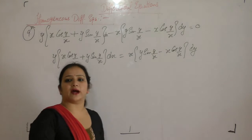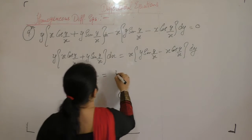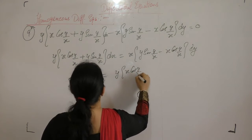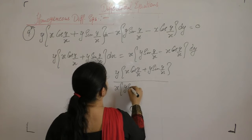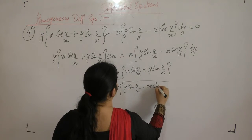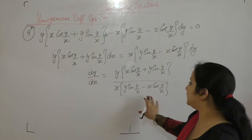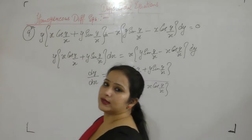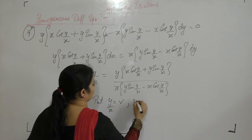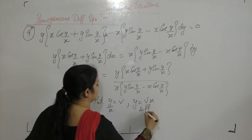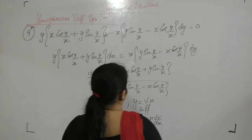We find dy upon dx equals y times x cos(y/x) plus y sin(y/x), divided by x times y sin(y/x) minus x cos(y/x). When we substitute x with lambda x and y with lambda y, the differential equation remains the same, confirming it is a homogeneous differential equation. So we put y equal to vx, and differentiating gives dy upon dx equals v plus x dv upon dx.